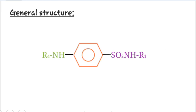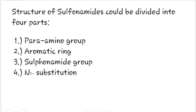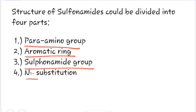This is the general structure of sulfonamides, which can be divided into four parts: first is the para amino group, second is the aromatic ring, third is the sulfonamide group, and the fourth is N1 substitution.